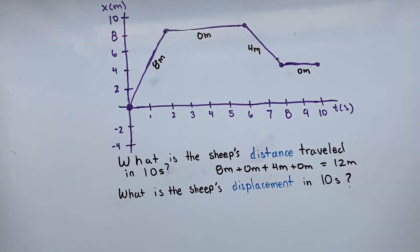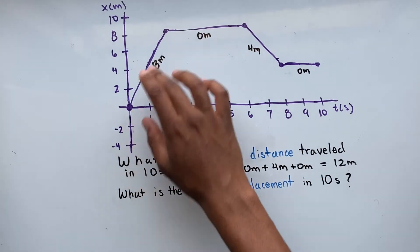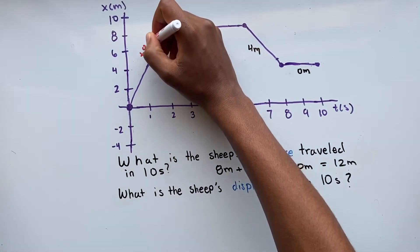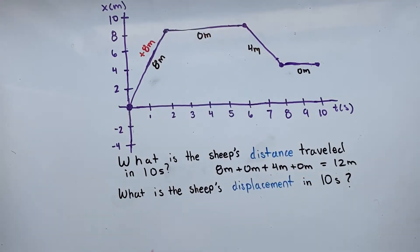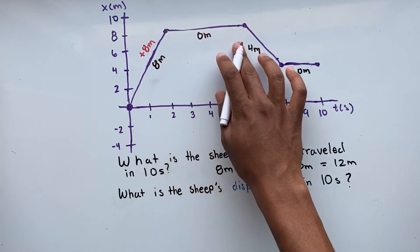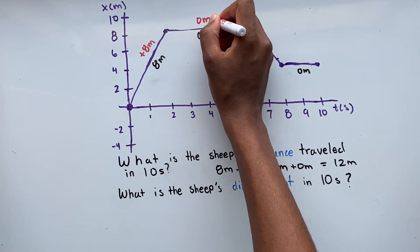Now let's solve for our displacement. Remember, displacement is defined as the change in position of an object — we take into account the magnitude as well as the direction. From 0 to 2 seconds, our sheep traveled from 0 to 8, so that's a positive 8 meters for our displacement. From 2 to 6 seconds, our sheep remained at the position of 8, so our displacement is 0 meters.